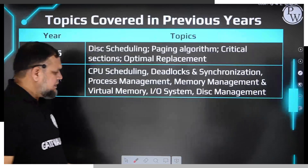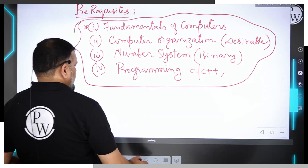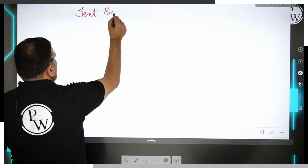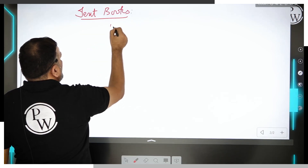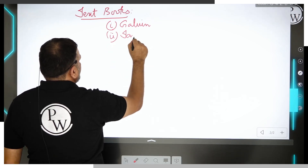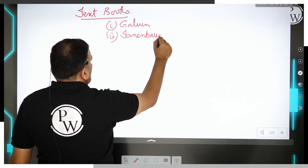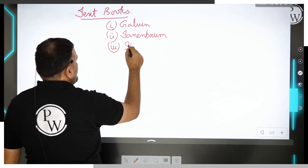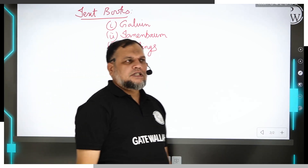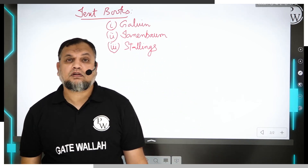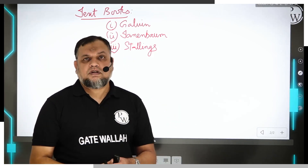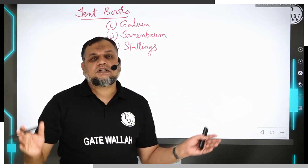Before I end, let me tell you which textbooks you generally need to follow for this syllabus. One important textbook you can refer to is Galvin; you can also refer to Tanenbaum, and some topics are well covered in the textbook by Stallings. However, these textbooks alone are not sufficient for attempting GATE exam questions — you require beyond that, and that will be covered in detail in the platform like PW when we take up the course.